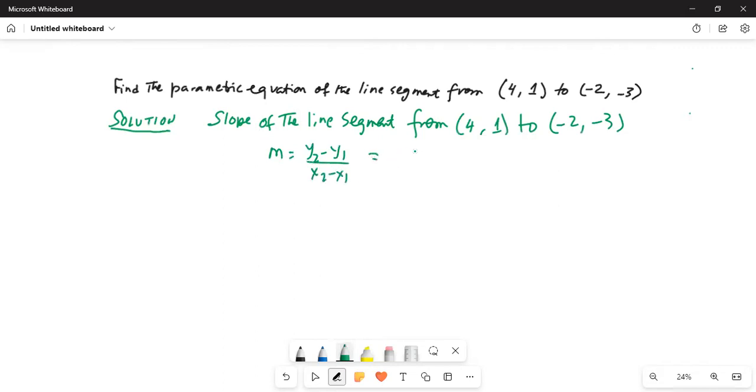So that will be equal to -3 for y2, then minus, and y1 is 1, divided by x2 is -2, and x1 is 4. So -2 minus 4.